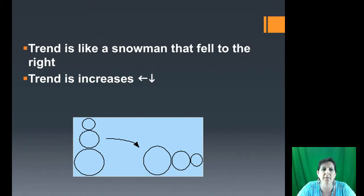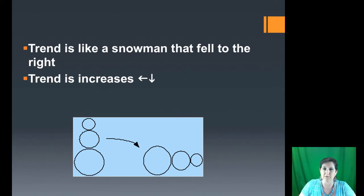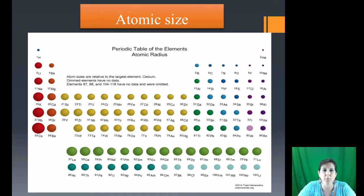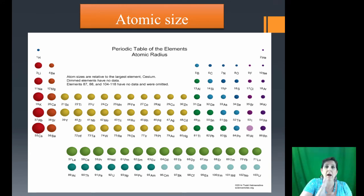The trend is like a snowman that fell down. We're getting bigger as we go down, and bigger as we move toward the left. The trend increases down and to the left. A picture of relative atomic sizes confirms we are definitely getting bigger going down and bigger moving to the left.